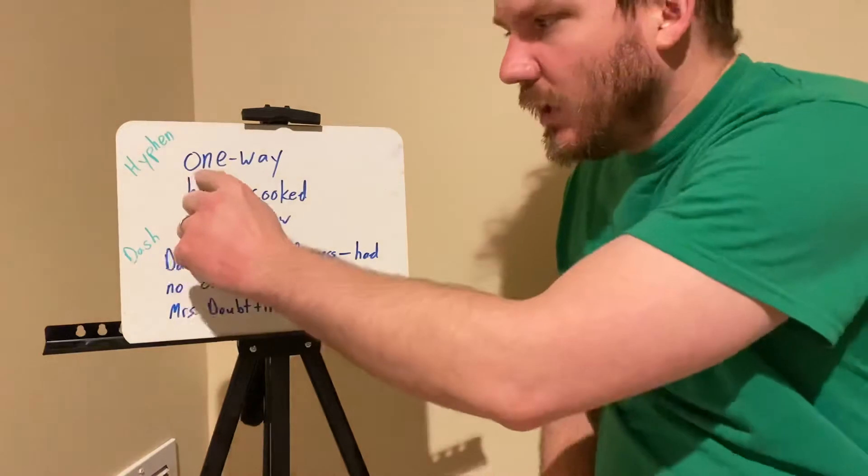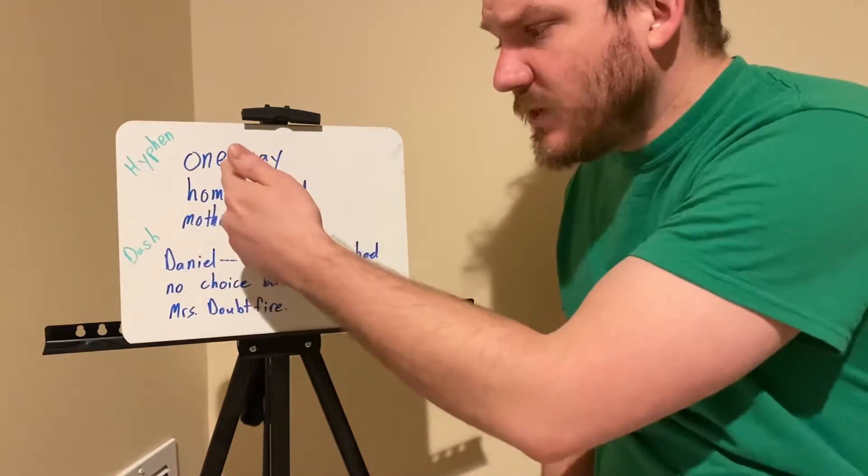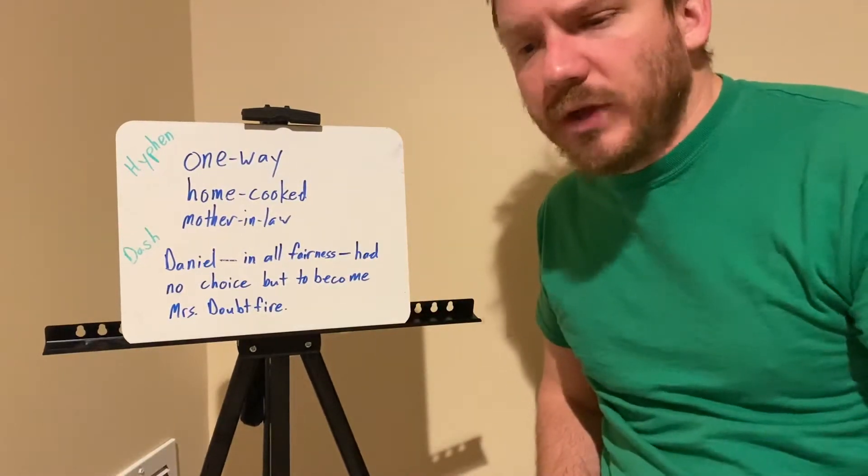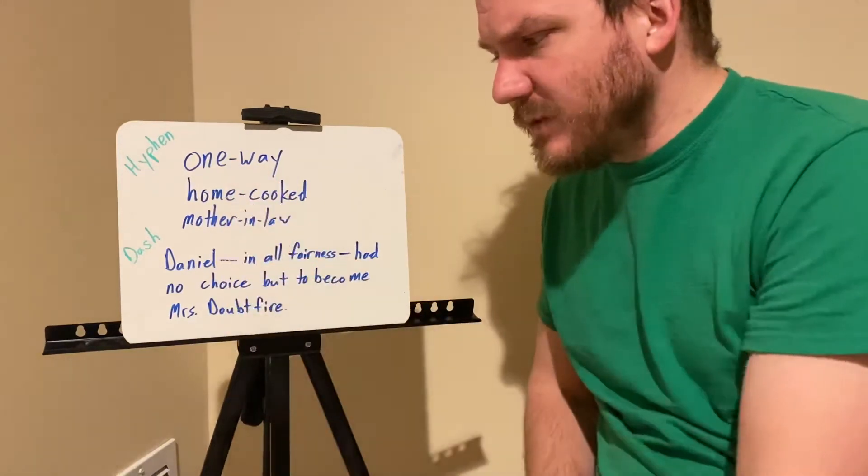Here are some examples. Hyphens would be one-way, home-cooked, mother-in-law. A hyphen is generally shorter than a dash, so when you're typing this up I made a video showing you how to make your Google docs type it up, but a lot of times what I do is I put two hyphens in place of a dash.